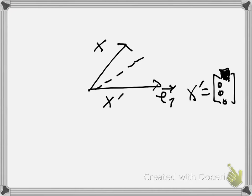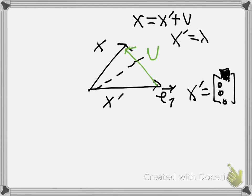Now, we have two vectors x and x'. We can find another vector u that goes from x' to x. So we can say that x equals x' plus u, and therefore x' equals x minus u.